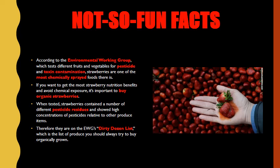Therefore, strawberries are on the EWG's — that stands for Environmental Working Group's — Dirty Dozen list, which is the list of produce you should always try to buy organically grown. Don't be frightened by this information — it's easy. All you have to do is go to your local farmers market, which caters to the organic produce market. If you aren't sure where a farmers market is in your area, just type 'farmers markets near me' into Google. Once you get there, reconfirm that the produce is organically grown from local farmers.